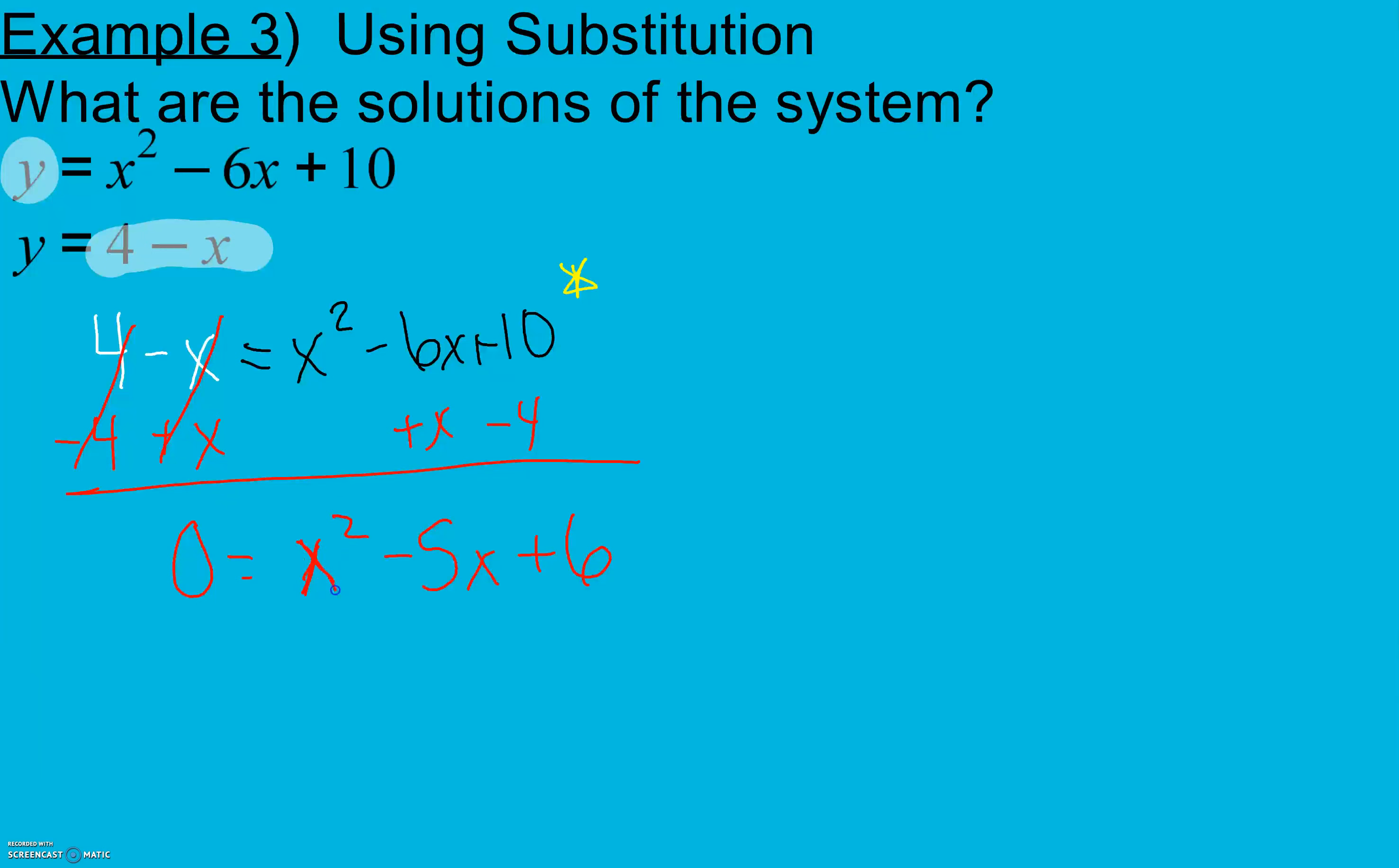Because I just have x squared here, no coefficient other than 1, I'm going to try and factor this first if I can. You could also use the quadratic formula or complete the square here, or use graphing. But since we're using substitution and I just have a coefficient of 1, I'm going to try and factor. So multiply to 6, add to 5, that's 2 and 3.